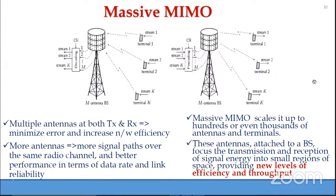Another key enabling technology is massive MIMO — Multiple Input, Multiple Output — meaning we use multiple antennas at both transmitter and receiver. This reduces bit error rate and increases network efficiency. More antennas means more signal paths over the same radio channel and better performance in both data rate and link reliability.